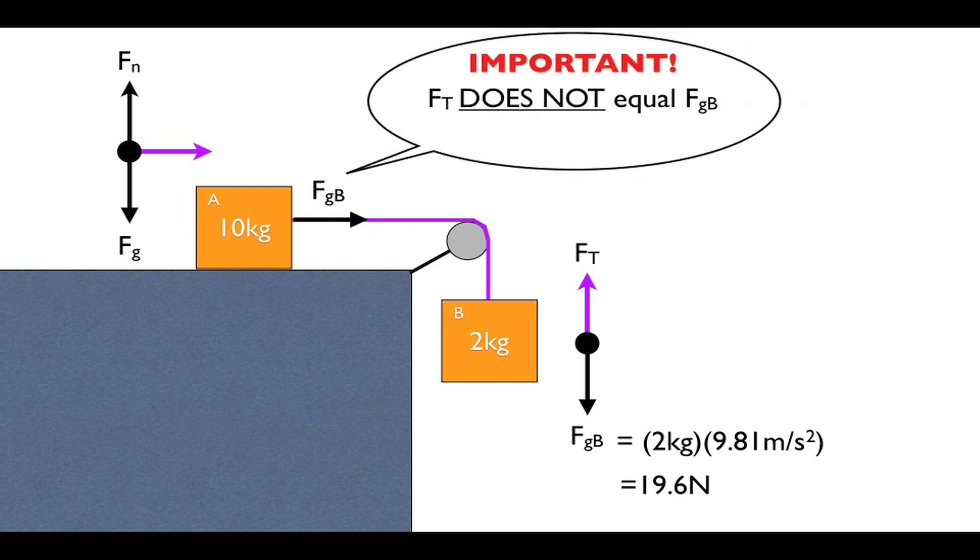Now this is very important. Just because the rope redirects the weight of B does not mean that the weight and tension are equal. In fact, if the boxes are accelerating, which they are in this case, they will not be equal. So let's not make that assumption.